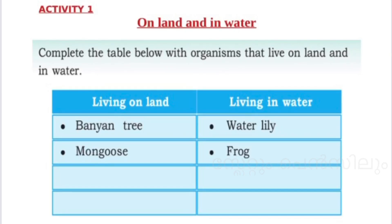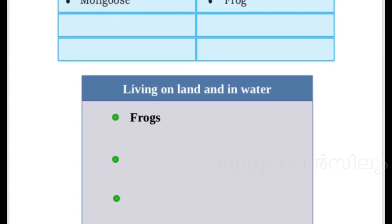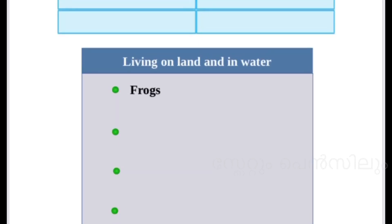The next category is living on land and in water. Organisms that live both on land and in water include frogs, crabs, crocodile, duck, and tortoise. Many organisms are there living on land and in water.